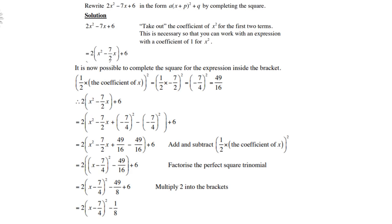Let's rewrite 2x²-7x+6 in the form a(x+p)²+q by completing the square.